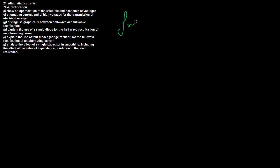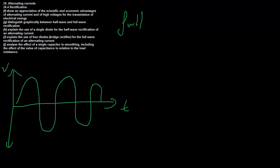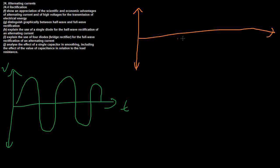So let's look at full wave first - actually, let's look at half wave first because that's intuitively the first thing you'd come up with. I'll draw my original natural AC here - voltage versus time - and natural AC is a sinusoidal wave. Half wave rectification is basically where you cut out all of the bottom part.